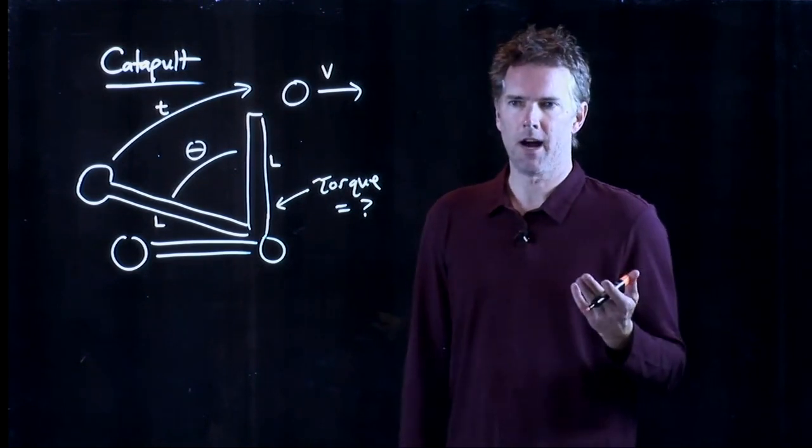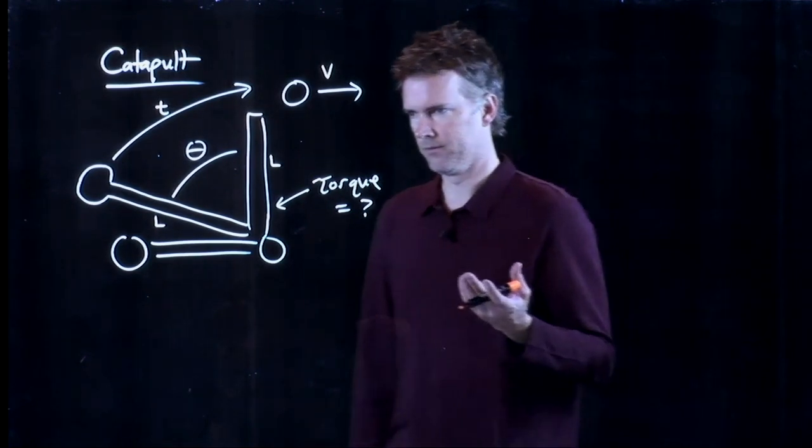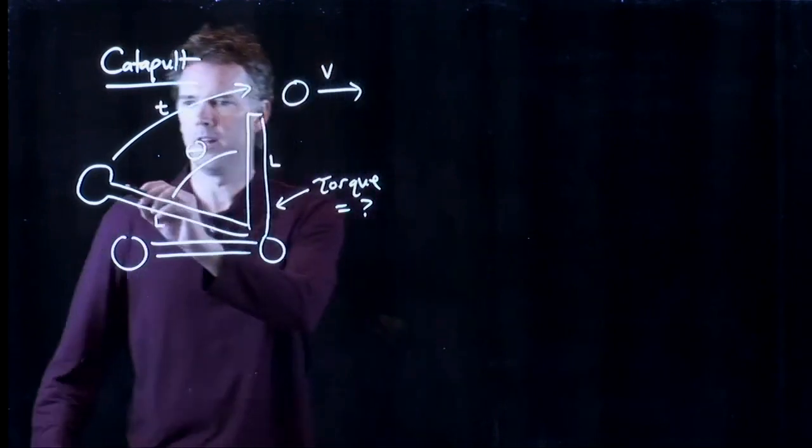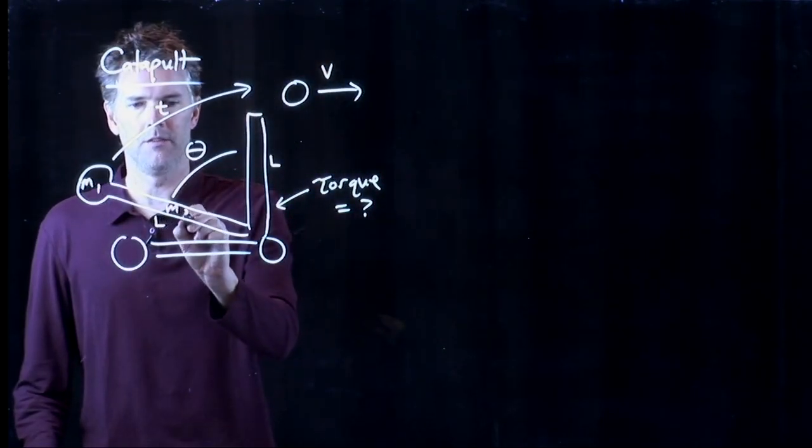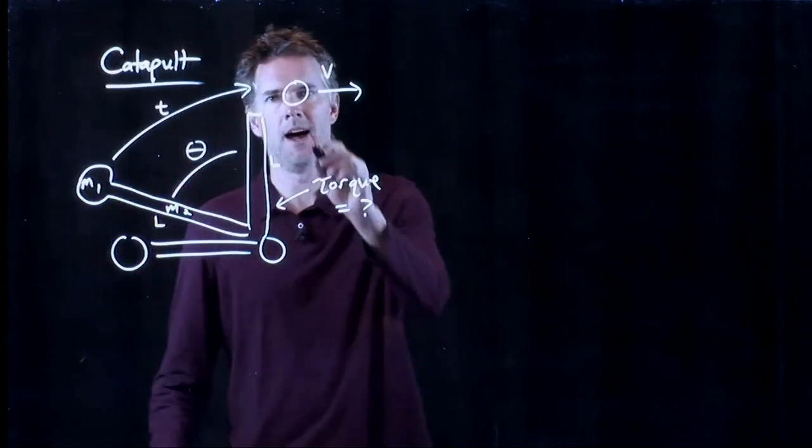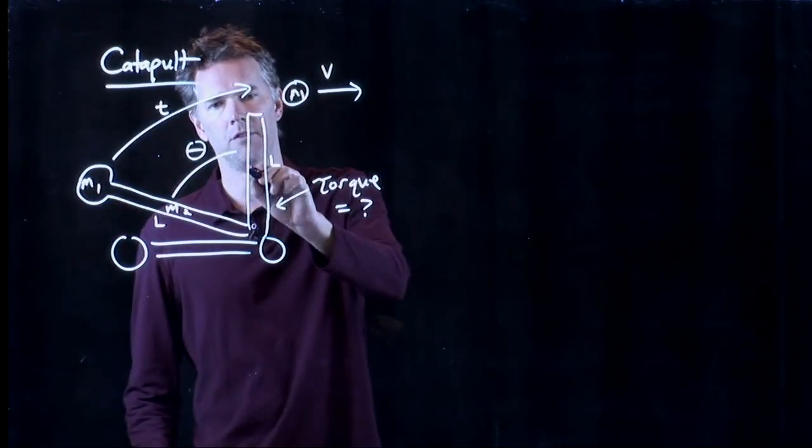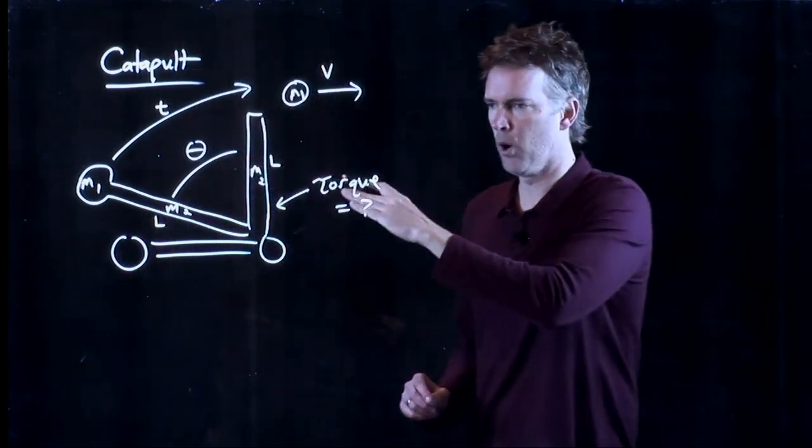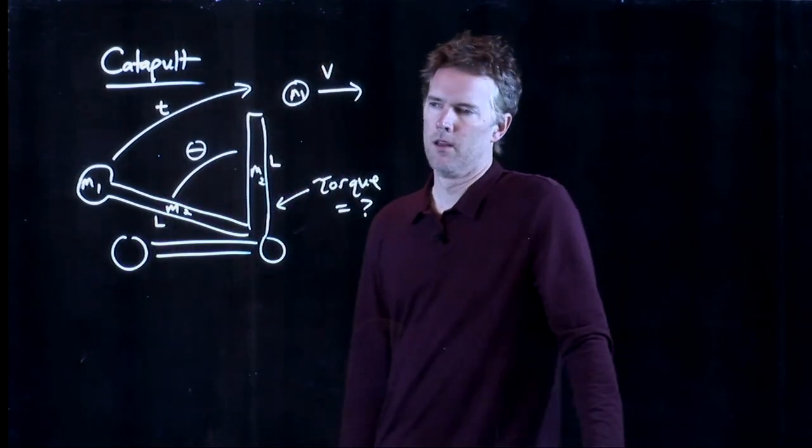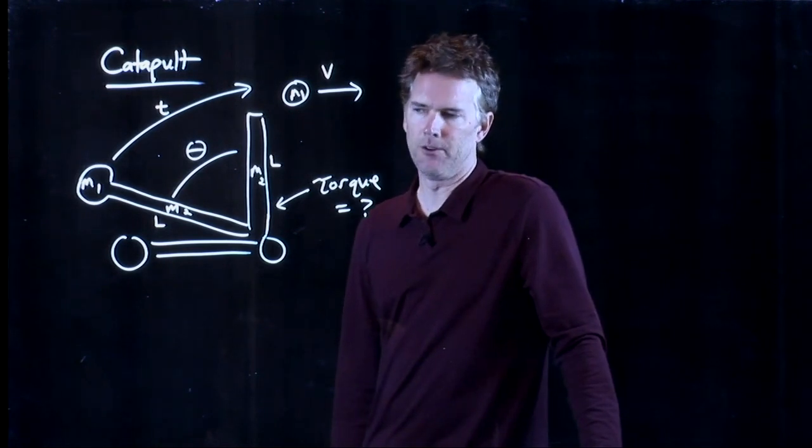Now, we also have to identify some masses involved here. So this is M1. This is M2. The mass of the ball versus the mass of the pole. Okay. How do we do this?